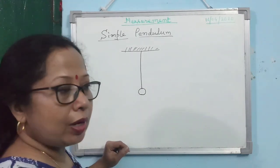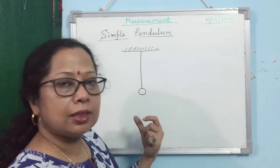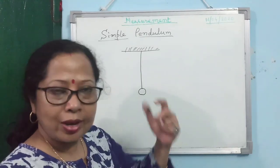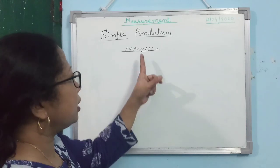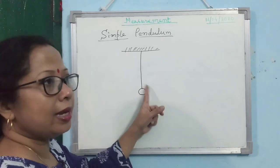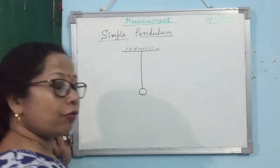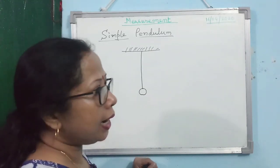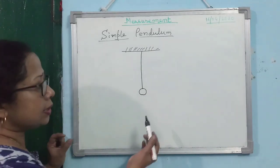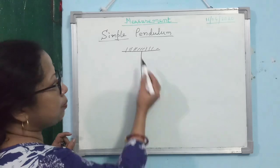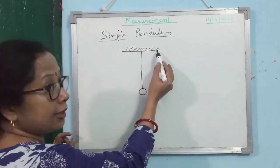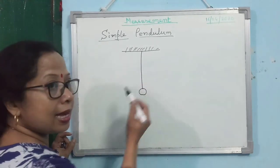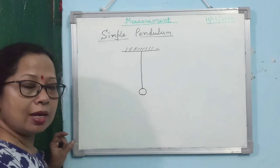What does inextensible mean? When you suspend a mass, generally what happens is that the string gets elongated. So in this case we are considering that it is not getting elongated. So this is the definition of an ideal simple pendulum. A simple pendulum is a heavy mass suspended from a rigid support by a massless and inextensible string.